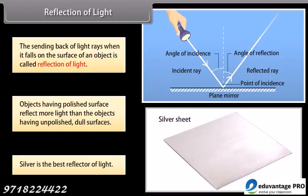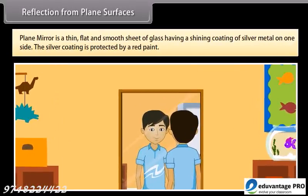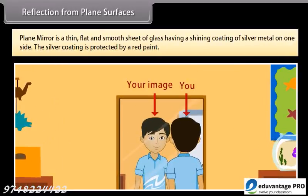Silver is the best reflector of light. Reflection from plain surfaces: a plain mirror is a thin, flat and smooth sheet of glass having a shining coating of silver metal on one side. The silver coating is protected by a red paint.